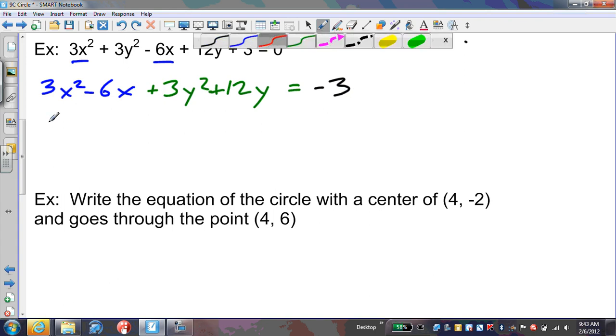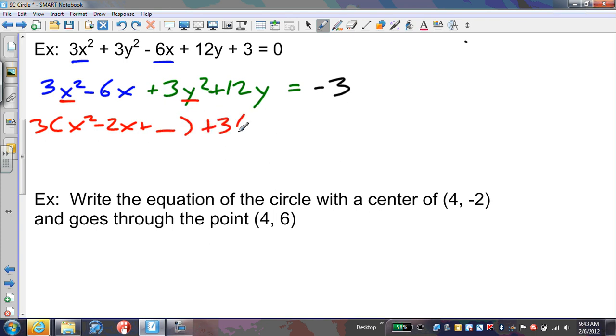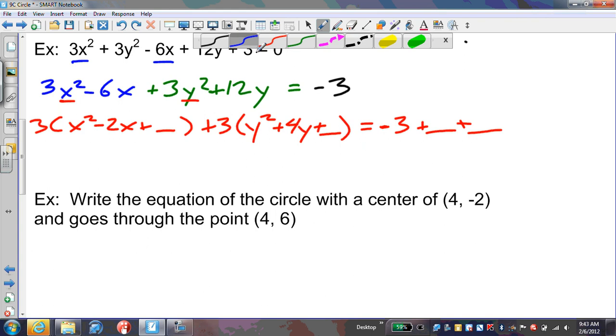I need to factor out a 3 because I want the x² and y² to be by themselves. So 3(x² - 2x + blank) + 3(y² + 4y + blank) = -3. Now let's fill in the numbers. This becomes (x - 1)². We add a 1 here, but notice, 3 times 1, so on the right side we're adding 3.